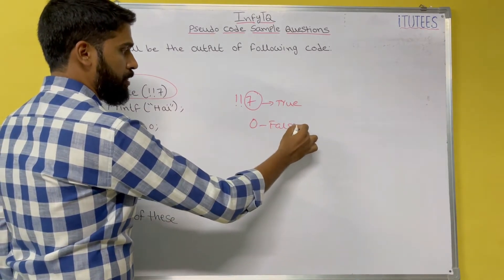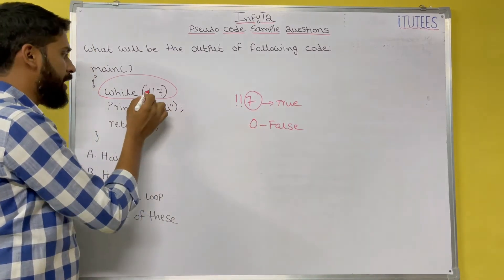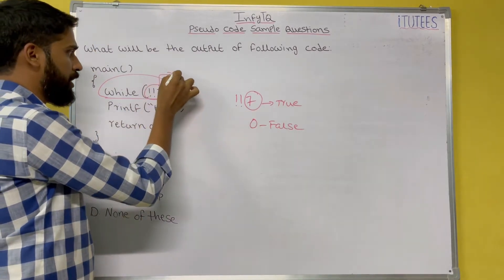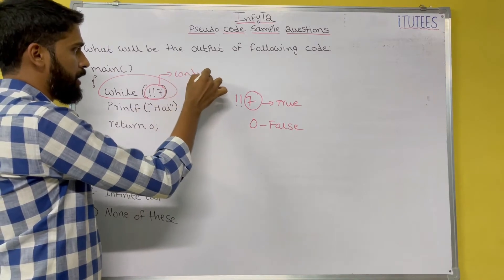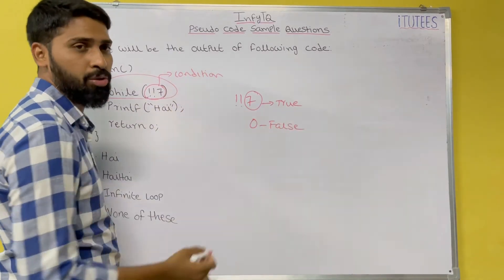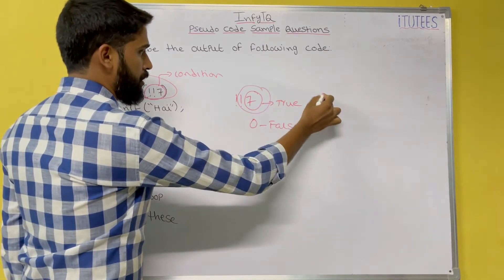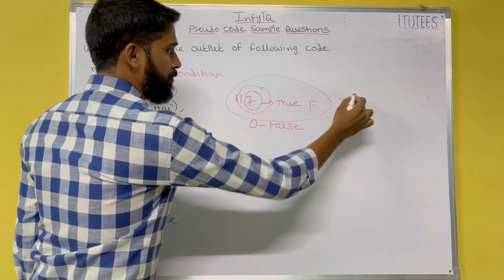So not not seven - in while you are going to give the condition here. The condition is not not seven. Seven means true, so not true means false, so not false means true.